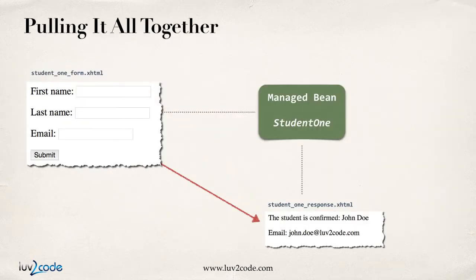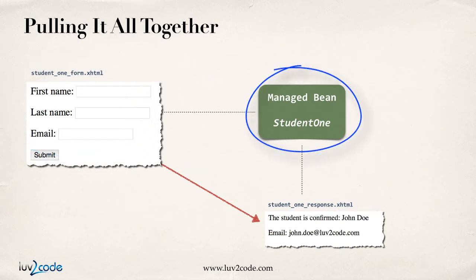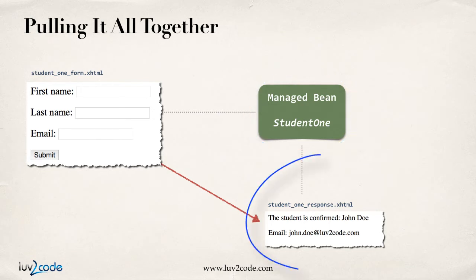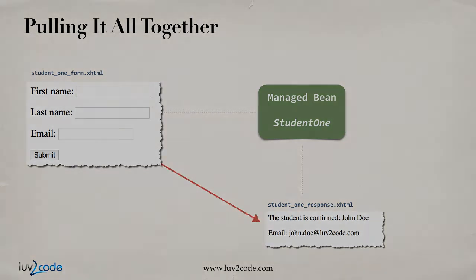So let's pull this all together with an example. In the top left, we're going to have our student form — first name, last name, email. The two fields for last name and email are going to be required. In the center, we're going to have a managed bean — I'll call it student one. And then at the bottom, we'll have our student one response page, basically our confirmation page for the user and their email information. Those are the big pieces in the application, and I'll walk you through each one coming up.